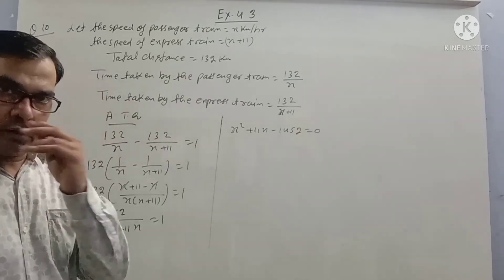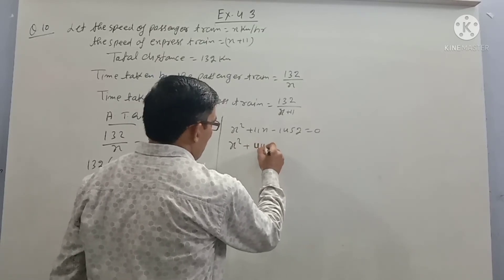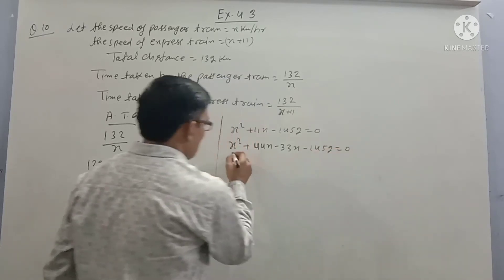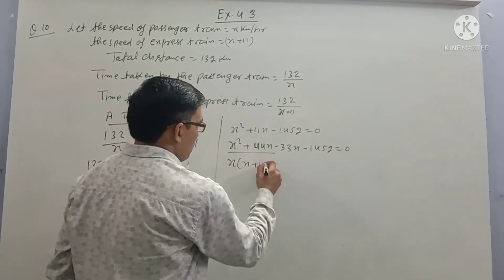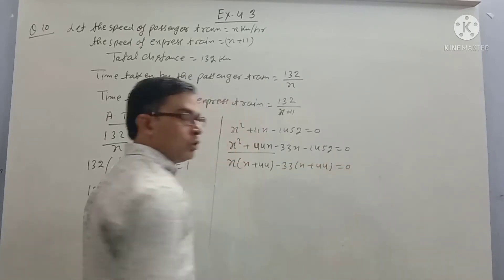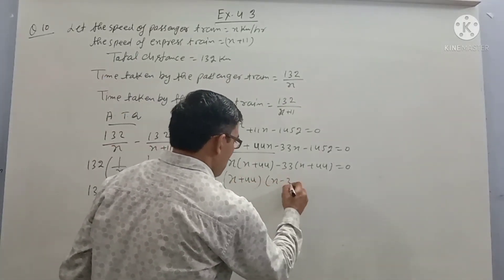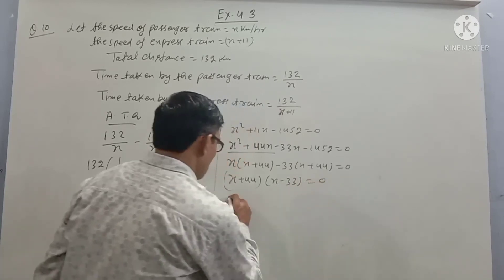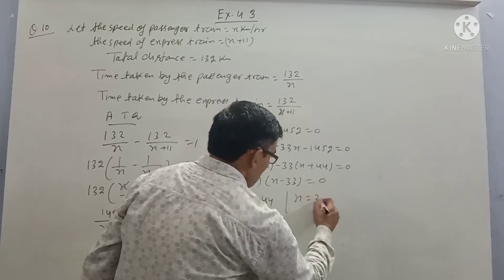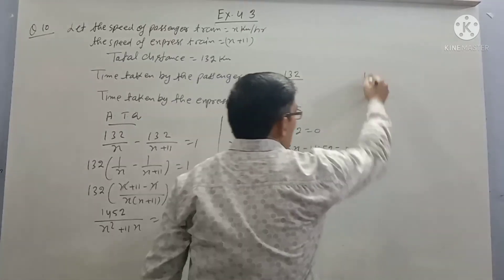Factoring: x squared plus 44x minus 33x minus 1452 equals zero. So x(x plus 44) minus 33(x plus 44) equals zero. Therefore (x plus 44)(x minus 33) equals zero. So x equals 33 or x equals minus 44. Since speed cannot be negative, x equals 33.